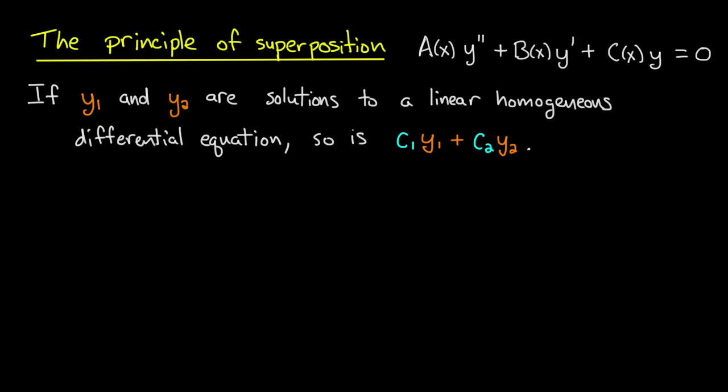We could consider, for example, a second-order linear homogeneous differential equation, which would have this form. Here a, b, and c are any functions at all of x, which is the independent variable, and y is our dependent variable.